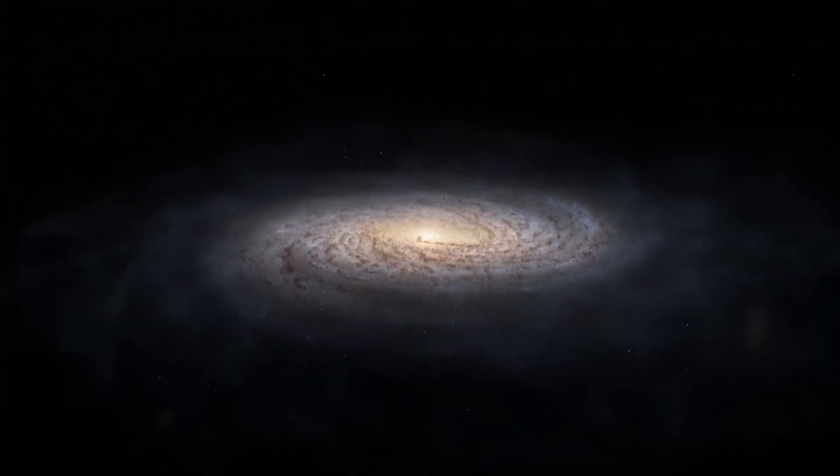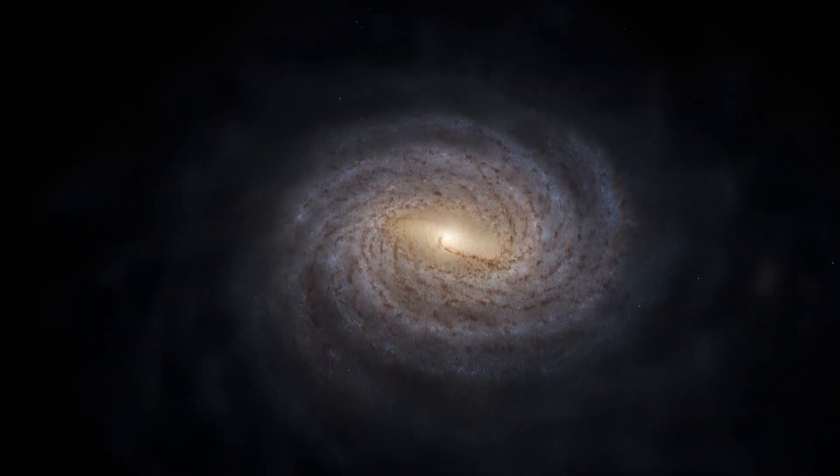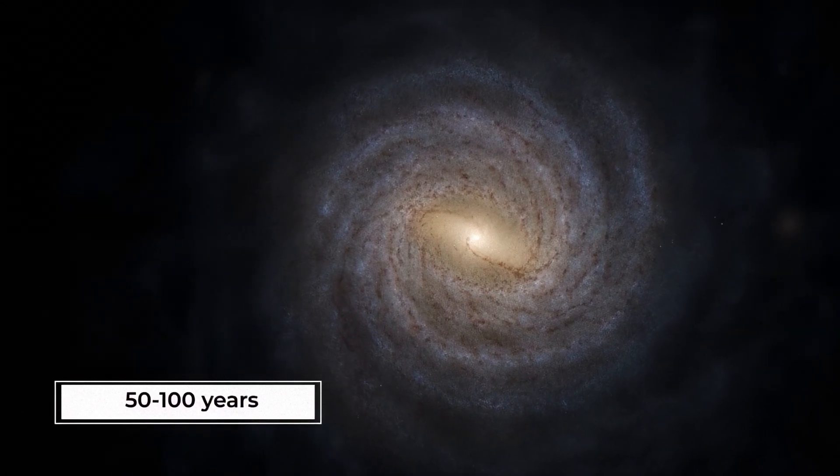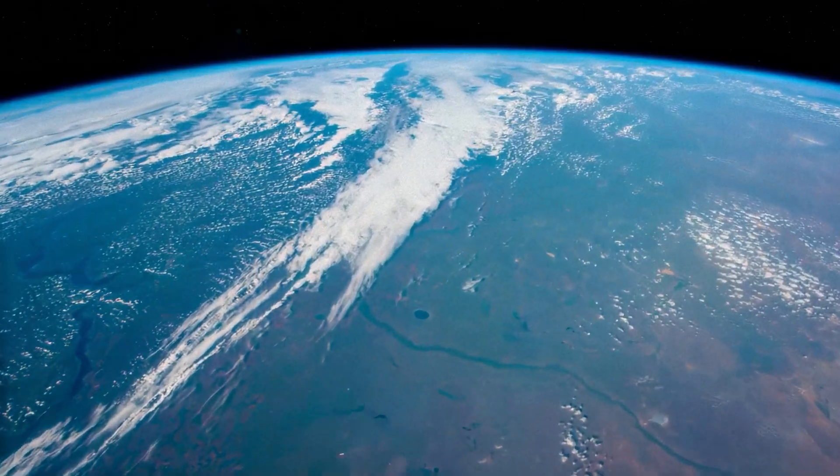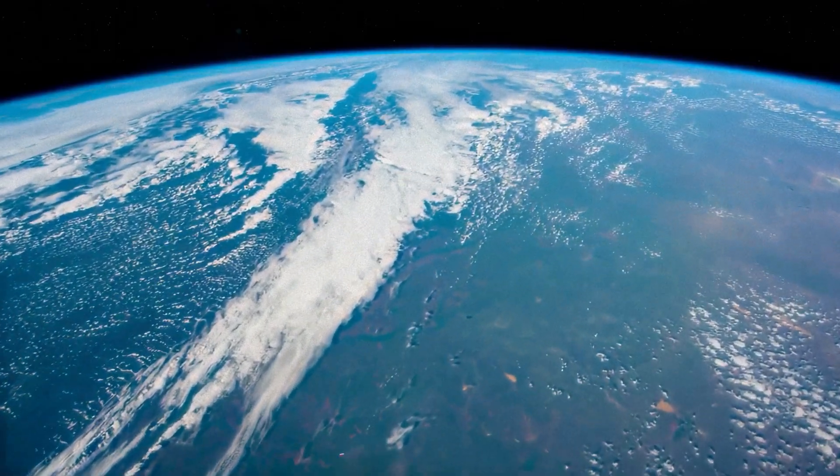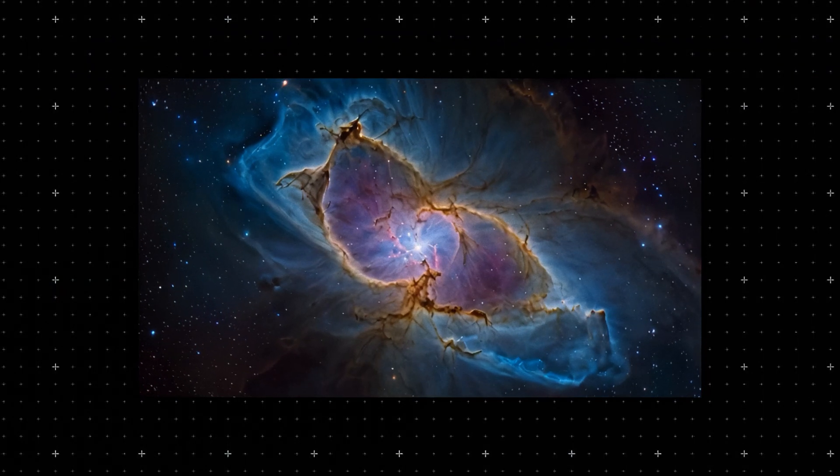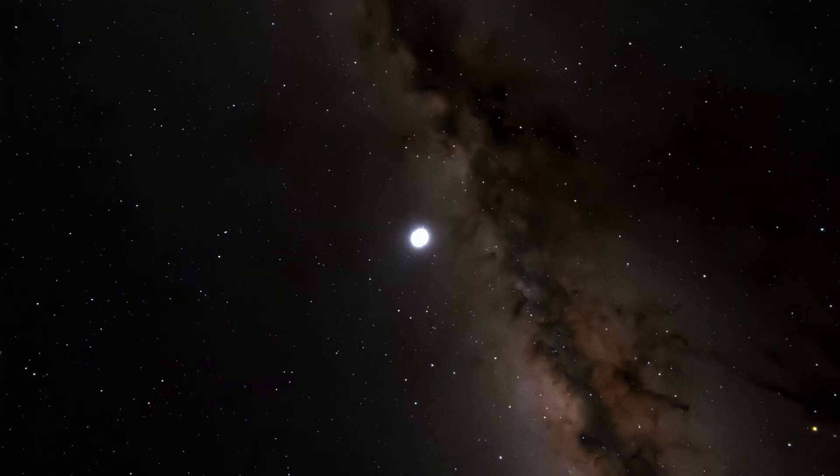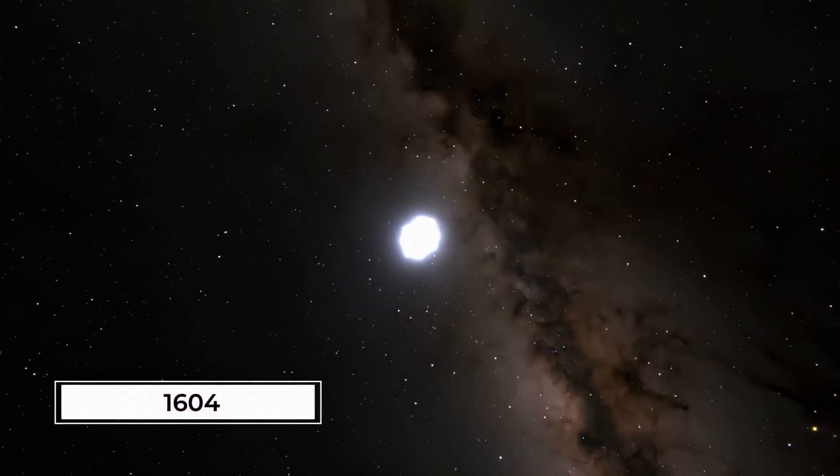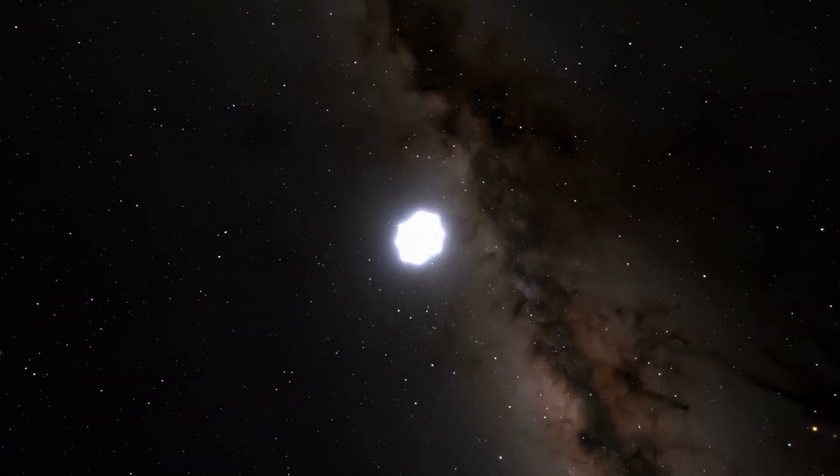Discussing the rarity of such phenomena is also important for understanding their significance. Supernovae in our galaxy, the Milky Way, occur approximately once every 50-100 years. However, not all of them are visible from Earth due to interstellar dust and other factors. The last observed supernova in our galaxy occurred in 1604, making the upcoming event particularly anticipated.